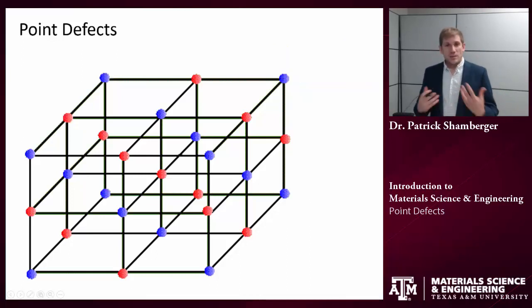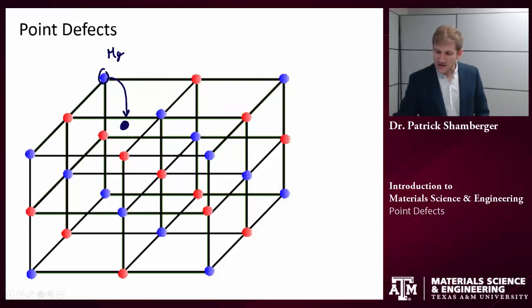Now there's another way that we can maintain charge balance. And that's instead of removing a charged, a positive and removing a negative species, we could remove a positive species but then put it somewhere else in the lattice. So again, let's say these blue are our magnesiums. So let's say this magnesium atom leaves its normal site and comes to sit here in an interstitial site. So this is what we call a Frenkel defect.